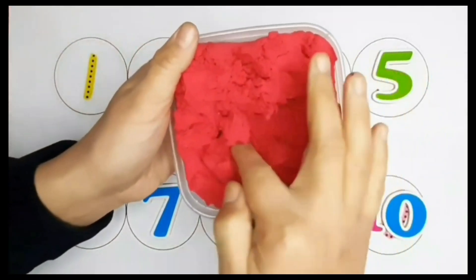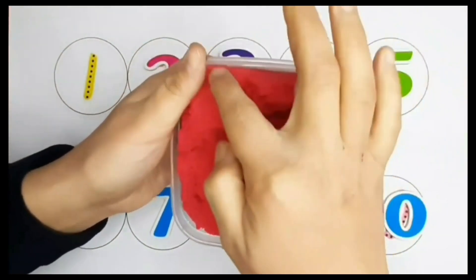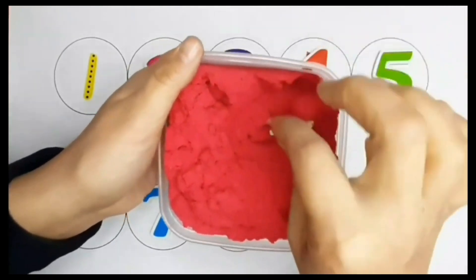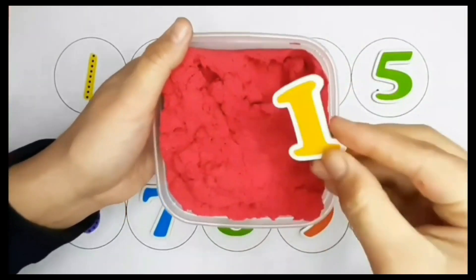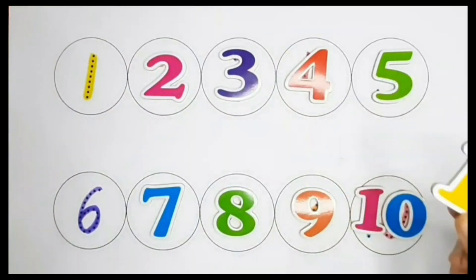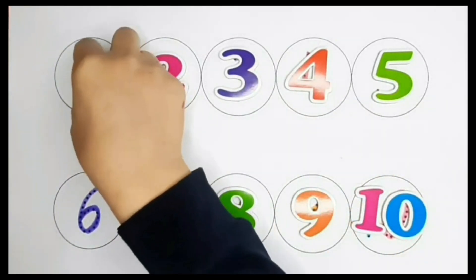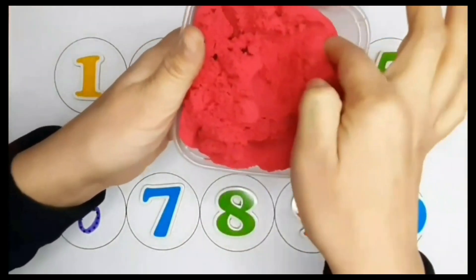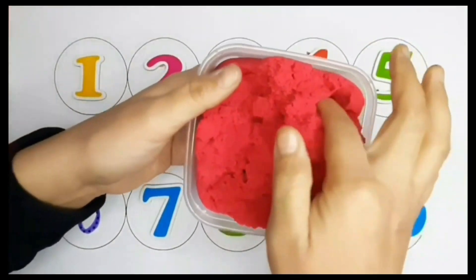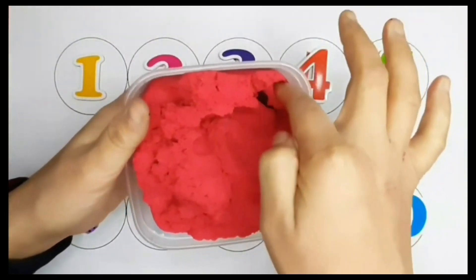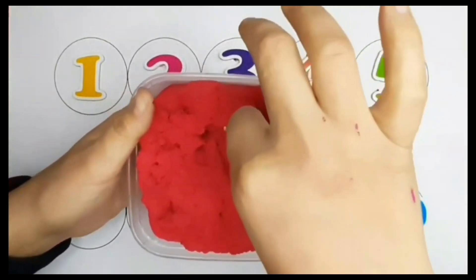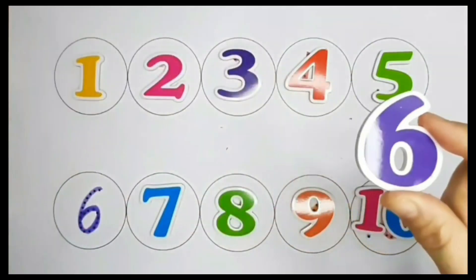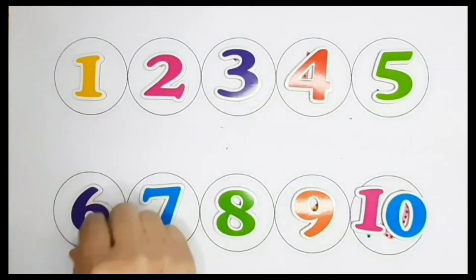Let's see which number is next. Number 1. That's right. There is only one number left. Do you know what it is? It's number 6. Yes, that's right. There it is.